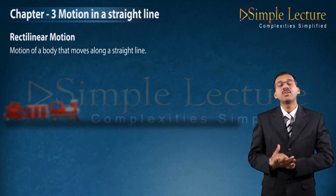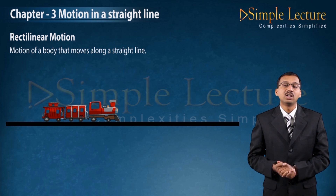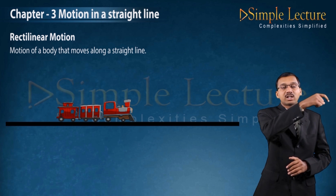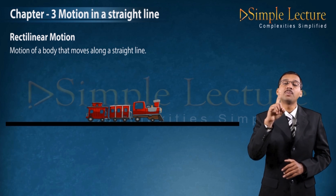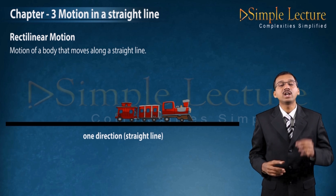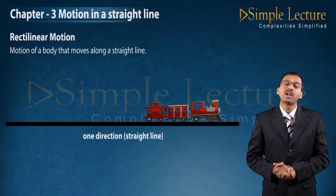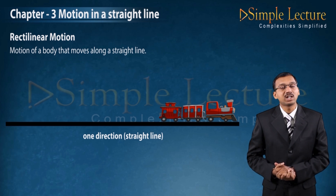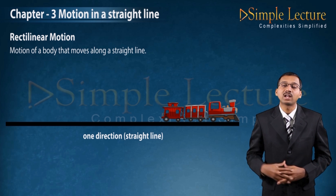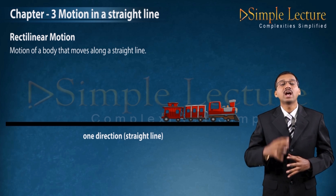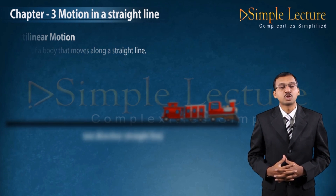For example, if you consider a train which is moving on a track, the train is moving in one direction — it is one-dimensional or along a straight line. Therefore, a train moving on a track is taken as an example of rectilinear motion.